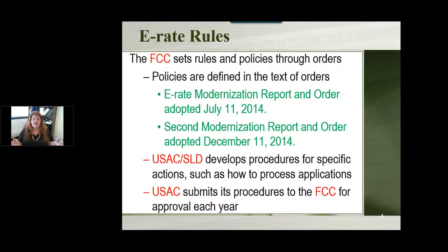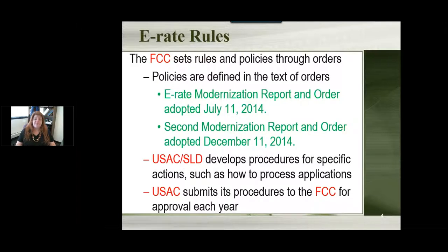The general overarching idea of the modernization was to modernize and streamline the program — try to make it easier for libraries and schools to apply, make the forms easier to use, and put it all online so everything is available to everybody. The FCC puts out these orders, USAC then figures out the procedures of how to make these things happen, submits them back to the FCC for approval, and then you get the result of what you're supposed to do.